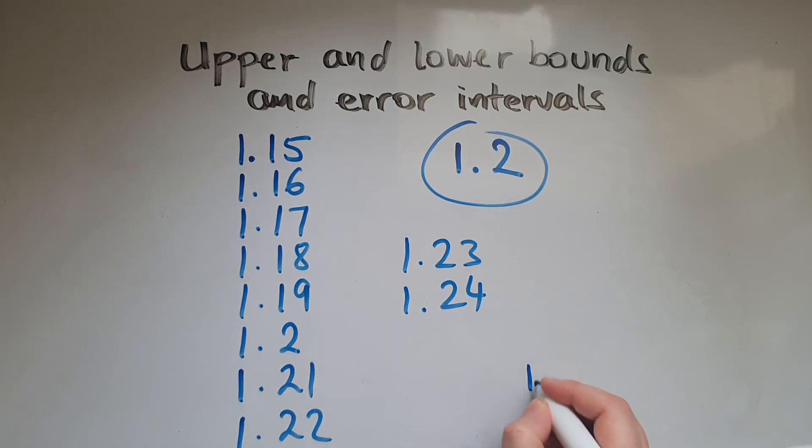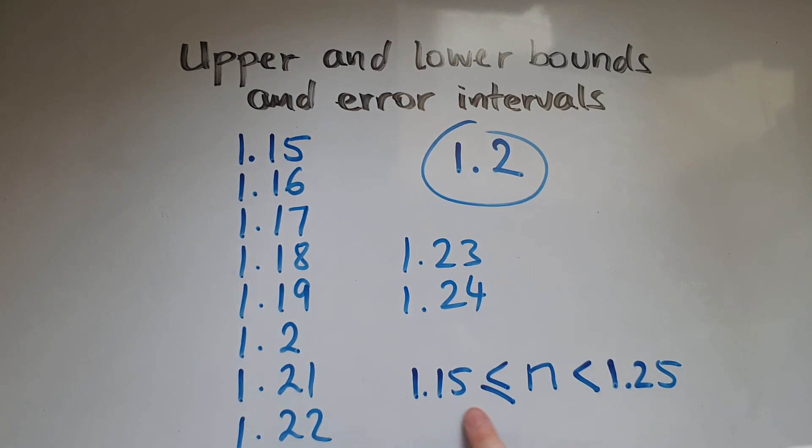So if we think of the range of numbers or values as n, you could give it any other letter if you like, that needs to be greater than or equal to 1.15 and less than 1.25. So we've represented the error interval through this inequality. We've got the lower bound and we've got the upper bound.